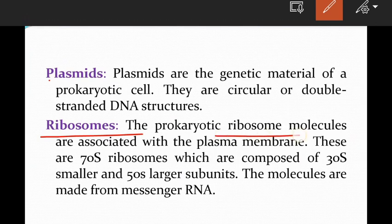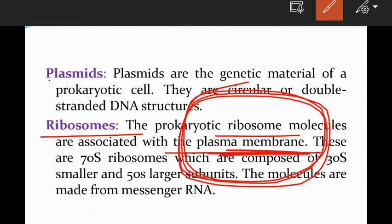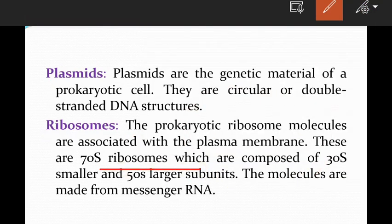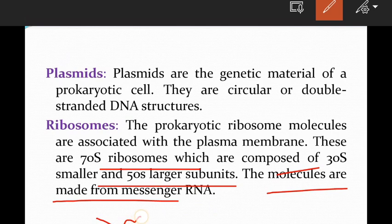And then ribosomes — the prokaryotic ribosome molecules are associated with the plasma membrane. These are 70S ribosomes, which are composed of 30S and 50S subunits. The molecules are made from messenger RNA, that is mRNA.